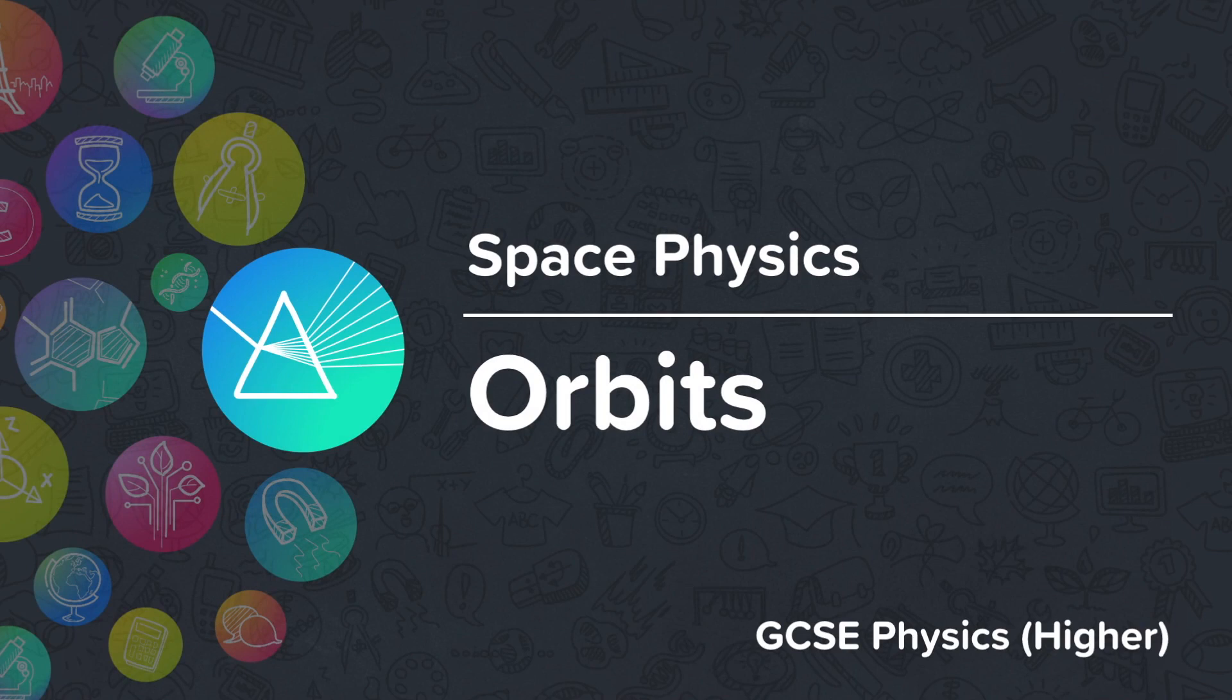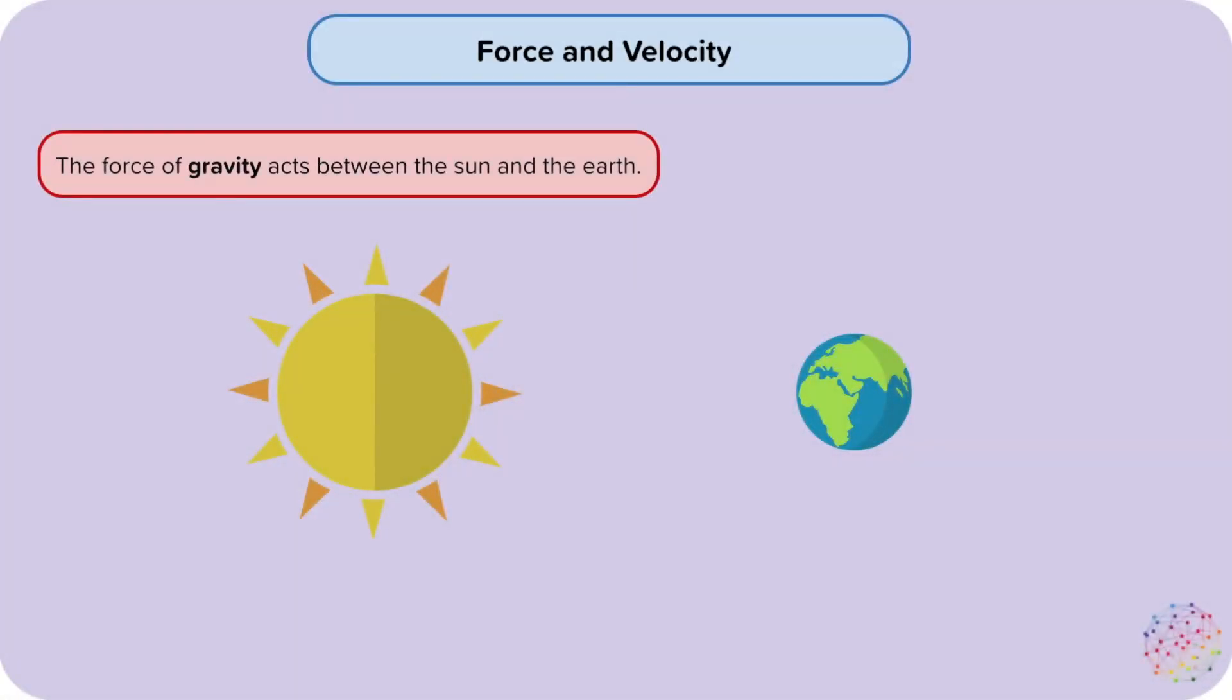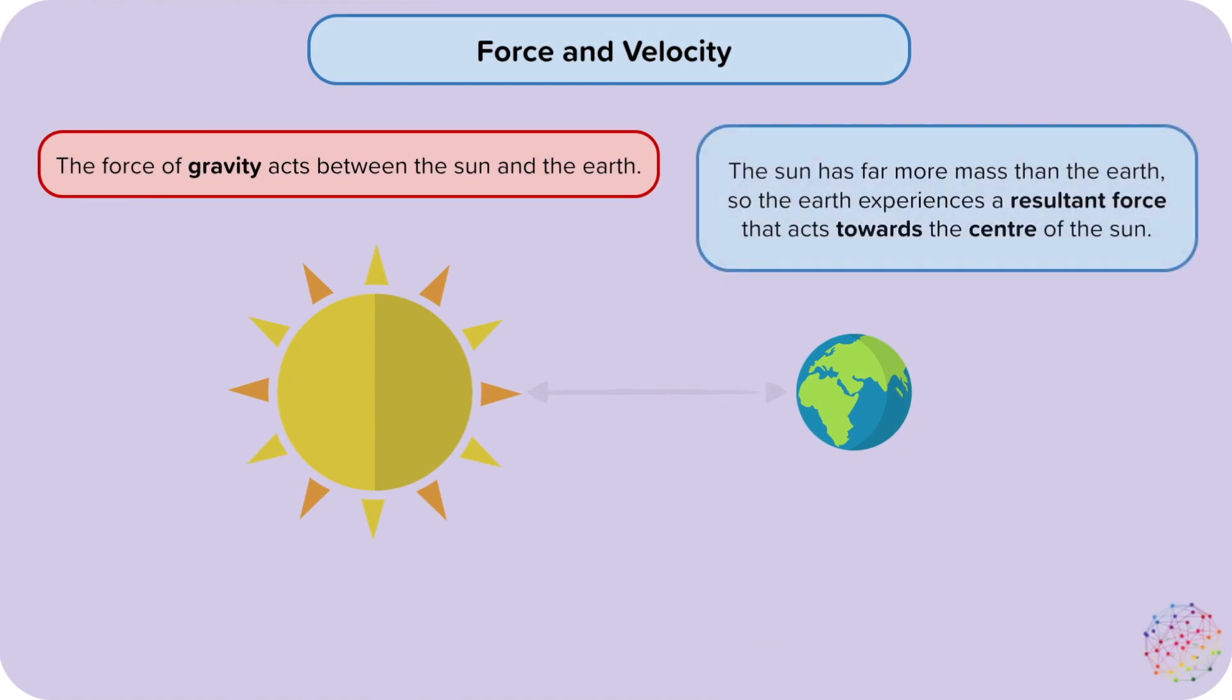This nugget is about orbits. The force of gravity acts between the Sun and the Earth. The Sun has far more mass than the Earth, so the Earth experiences a resultant force that acts towards the centre of the Sun.